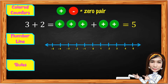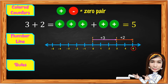The second method is using the number line. Always start at 0, the origin. Move 3 units to the right because positive 3, and another 2 units to the right because positive 2. It ends at positive 5. Thus, 3 plus 2 equals 5.